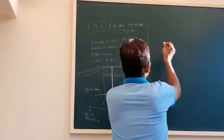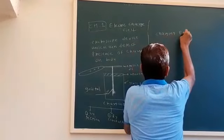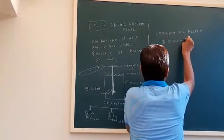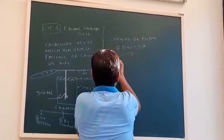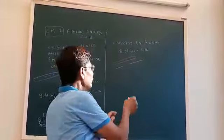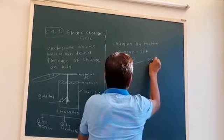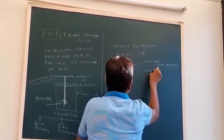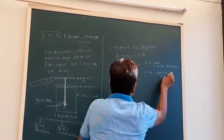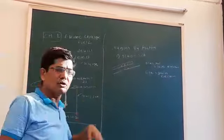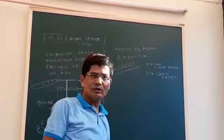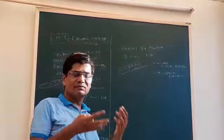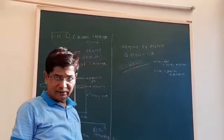Charging by friction: glass rod and silk. When we rub the glass rod with the silk, the glass rod becomes positively charged because the glass rod loses electrons. Whatever body loses electrons becomes positively charged, and whichever gains electrons becomes negatively charged. There is also a transfer of mass in friction, though it may be very small, as there is a physical contact and transfer of electrons takes place.